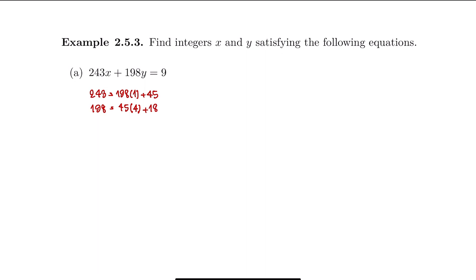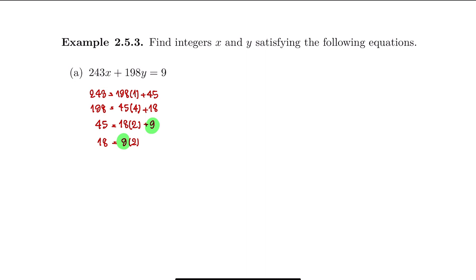Then we divide 45 by 18, so we have 45 equal to 18 times 2, which is 36, and 45 minus 36 is 9, so the remainder is 9. Then 18 divided by 9 equals 2 with remainder 0. That means 9 is the greatest common divisor of 243 and 198, confirmed by the Euclidean algorithm.